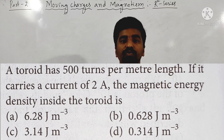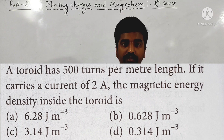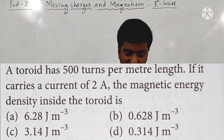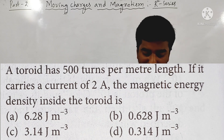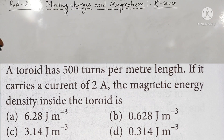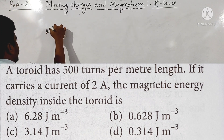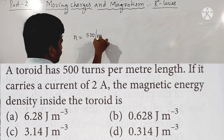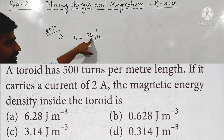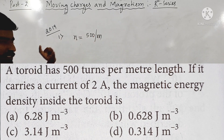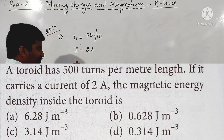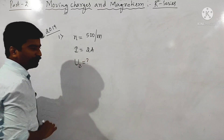Hello dear students. Next we move on to the question paper 2019. The first question: a toroid has 500 turns per meter length, if it carries a current of 2 ampere, the magnetic energy density of the toroid is how much? They are given number of turns per unit length n = 500 per meter, and current = 2 ampere.